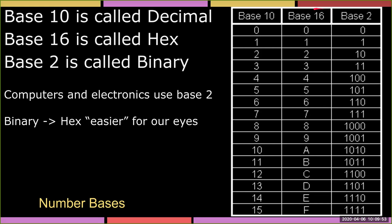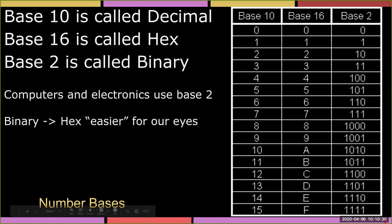One of the nifty things is that 16 is a power of two, and that relates to the four bits. The minimum and maximum value you can express with four bits — zero-zero-zero-zero through one-one-one-one — can be expressed with a single digit in base 16.